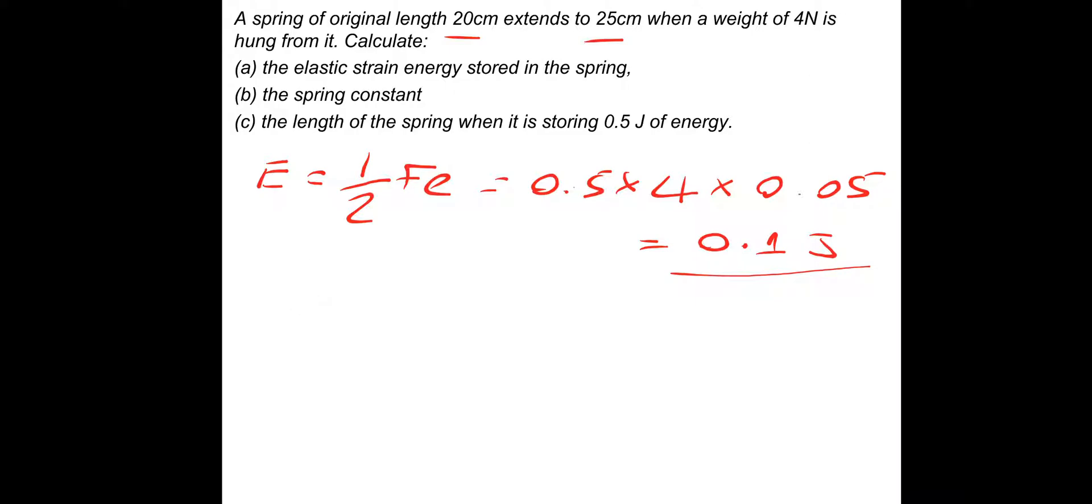Part B, let's do the spring constant. So that's F equals KE. And the spring constant is force over extension. So we've got a force of 4 newtons divided by an extension 0.05 metres, which gives a spring constant of 80 newtons per metre.